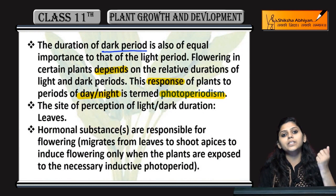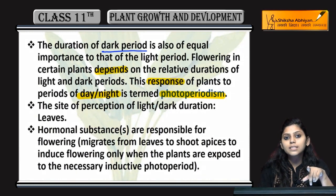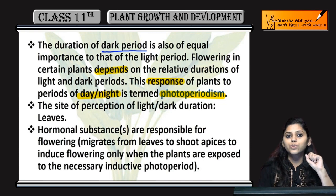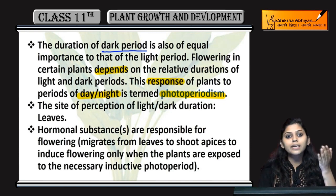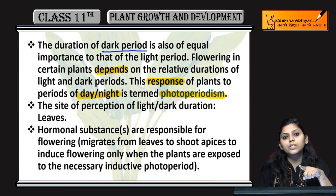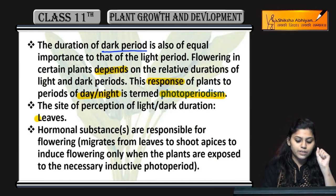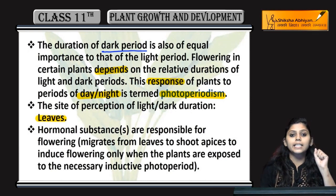कहां होता है? कहां पर receive करता है plant light को? We all know photosynthesis कहां होती है? Leaves में होती है. Photosynthesis के लिए sunlight जरूरी होती है. तो sight क्या होगी photoperiodism की? कहां perceive करती है light? Light perceive करती है leaves.